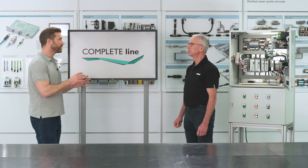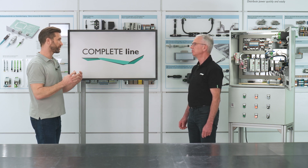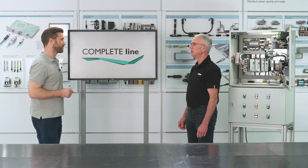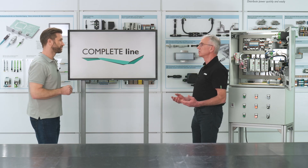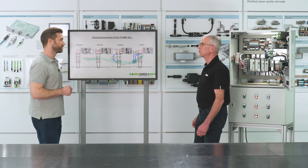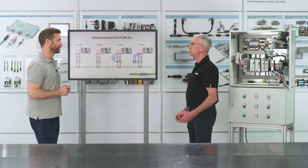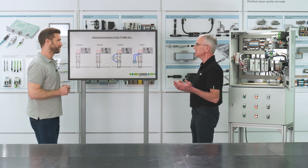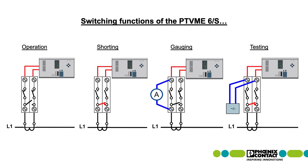Norbert, you mentioned different switching options for PTVME. Besides on and off, what does it mean? Can you show that to us? Of course. The various types of voltage and current transformers need special treatments for safe and error-free operation. On this monitor, you can see four different main switching options.